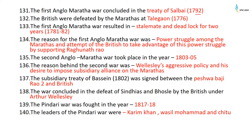The British were defeated by the Marathas at Talegaon in 1776. The First Anglo-Maratha War resulted in a stalemate and deadlock for two years from 1781 to 1782. The reason for the First Anglo-Maratha War was the power struggle among the Marathas and the British attempt to take advantage by supporting Raghunath Rao — again, the British wanted to be kingmakers.